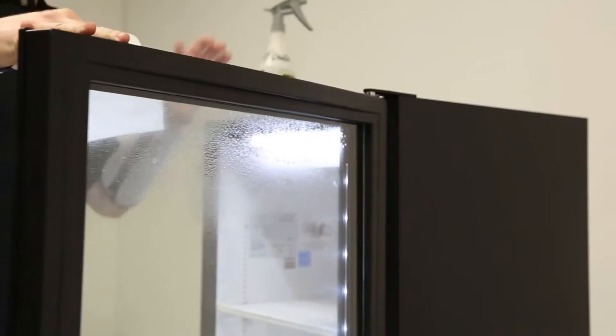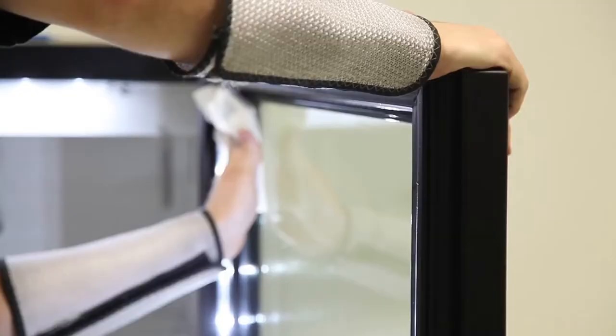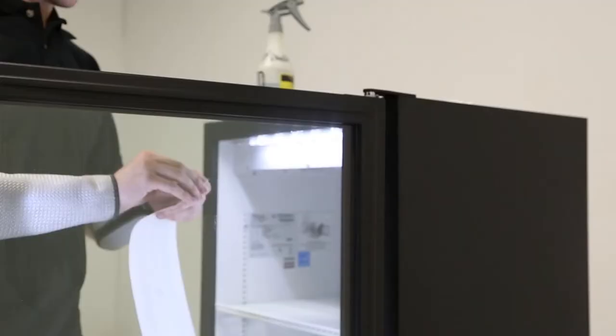Use glass cleaner to clean the window, removing any dust or debris. Then peel the backing off and spray the glass cleaner in the area where the decal will be placed. You may also spray cleaner on the back of the decal.